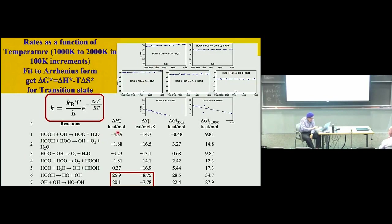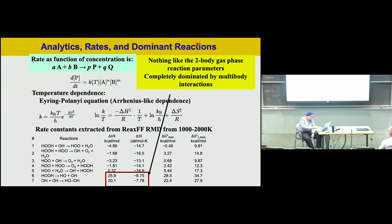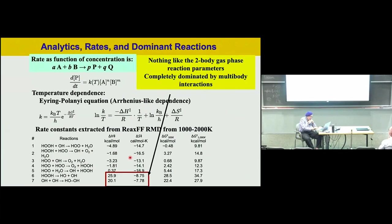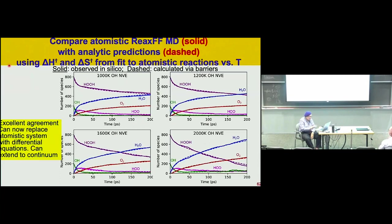By taking the actual temperature dependence — how the peroxide disappears, how intermediates like HO₂ and OH appear — we get reaction barriers and activation entropies from fitting temperatures from 1000 to 2000 K. Putting that into differential equations gives us a smooth curve as opposed to the slightly rough curve from atomistic dynamics. So those seven equations and their kinetic parameters completely describe the system we get from the reactive dynamics.